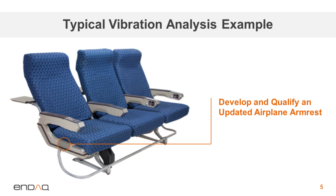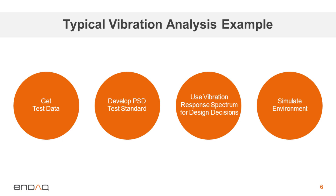Now we'll get into the example we're going to run through today. I put myself in the shoes — or should I say the seat — of a design engineer developing a new armrest, updating the electronics of a commercial airline armrest. I wanted to understand the vibration environment of this armrest, so I put a sensor where indicated and got the experimental data. There are four major steps: first is to get the experimental data. Vibration test standards can provide an overview of different environments, but they're always general, so you should really go get the vibration profile from the specific environment your system is intended to operate in.